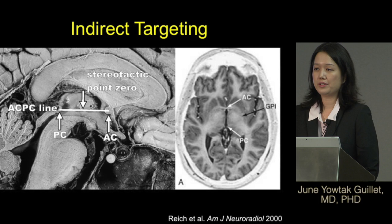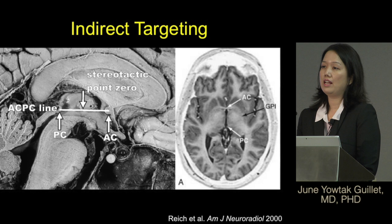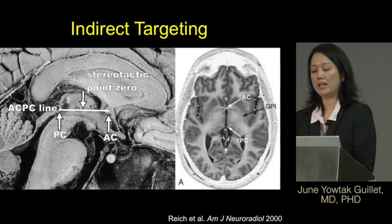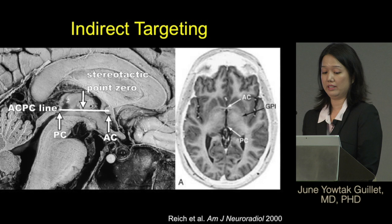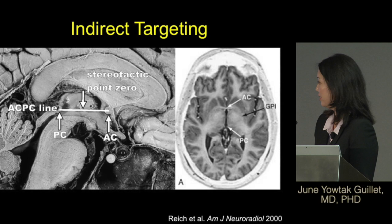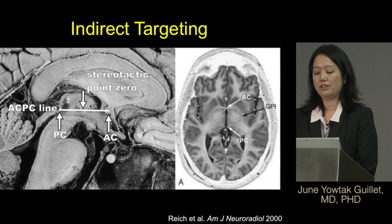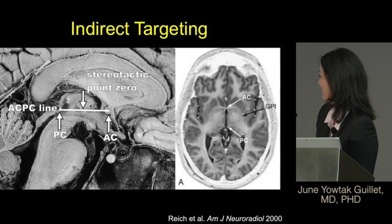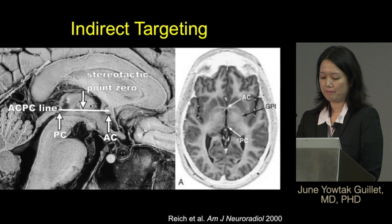There are two different ways to target the globus pallidus: indirect and direct targeting. For indirect targeting, we use arc-centered stereotaxy with coordinates to pinpoint the target in the brain. We pick two reference points — the anterior commissure and the posterior commissure — and draw an imaginary line between them. The midpoint, called the mid-commissural point, is stereotactic point zero. All other coordinates are referenced to this point, including the GPI, which sits off midline to the side.